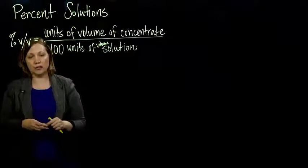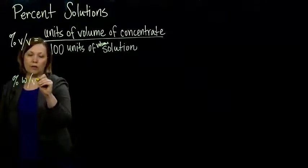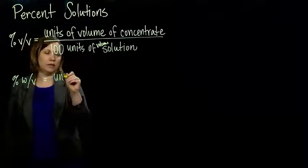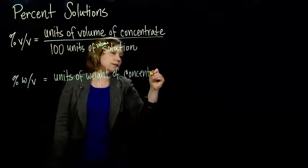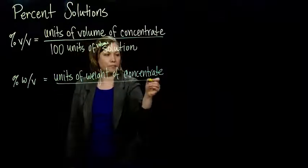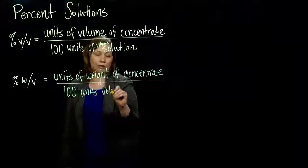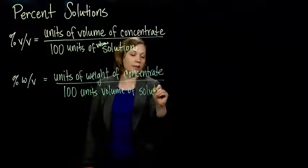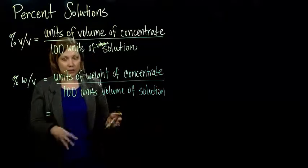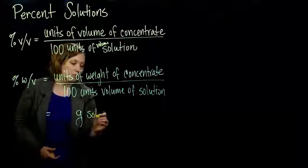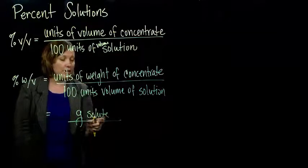Now we're being very specific about how we're measuring that concentrate. You could also have percent weight per volume. This would be units of weight of our substance — our solute — per 100 units volume of our solution. Usually, when working in the metric system, the basic unit of measure is grams, so grams of our solute — the thing that we're dissolving, or diluting — per 100 milliliters of solution.